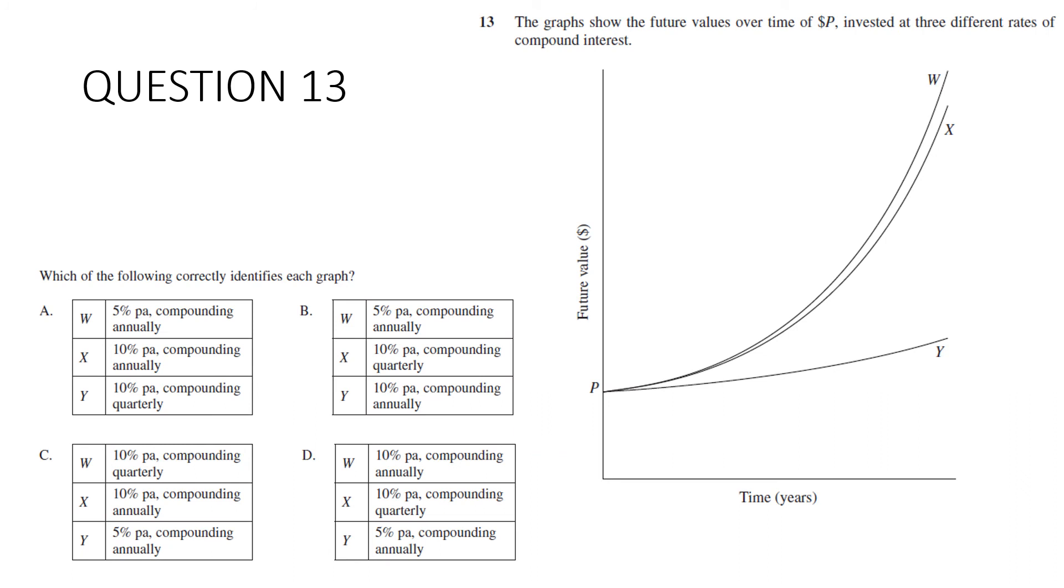Question 13. The graphs show the future values over time of P dollars invested at three different rates of compound interest. Which of the following correctly identifies each graph? Let's see if we can have a go at this. So we've got two that are very close. And then Y is significantly lower. We're just going to go through each one and see if we can eliminate. Let's have a look at this one to begin with. So W is 5% per annum compounded annually. And X is 10% per annum compounded annually. This one's wrong. Because this is a higher interest rate. This one should be greater than this one. And it's not. It's lower. So it's not A.